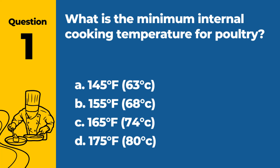Question 1. What is the minimum internal cooking temperature for poultry? a. 145°F / 63°C. b. 155°F / 68°C. c. 165°F / 74°C. d. 175°F / 80°C. Answer: c. 165°F / 74°C. The minimum internal cooking temperature for poultry is 165°F / 74°C to ensure harmful bacteria are killed.